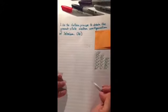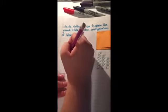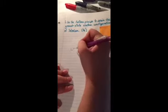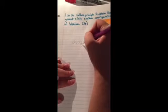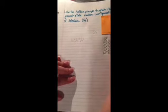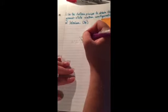So since selenium's number is 34, we need to get to 34. So we begin with 1s2, 2s2, 2p6, and that already right there gives us 10.